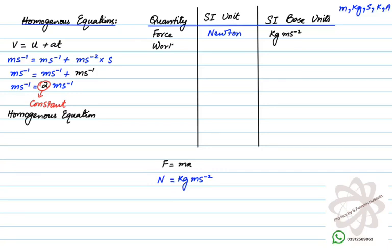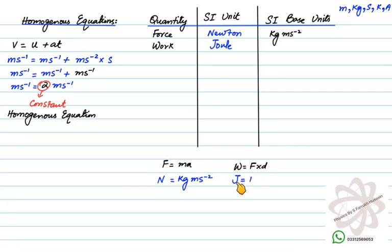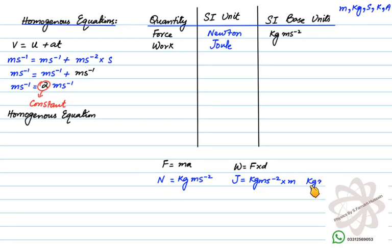Similarly for work, the SI unit is Joule. Work = force × distance travelled in the direction of force. Force in SI base units is kg ms⁻², and distance is in meters, so multiplying gives kg m² s⁻² as the SI base unit of work.